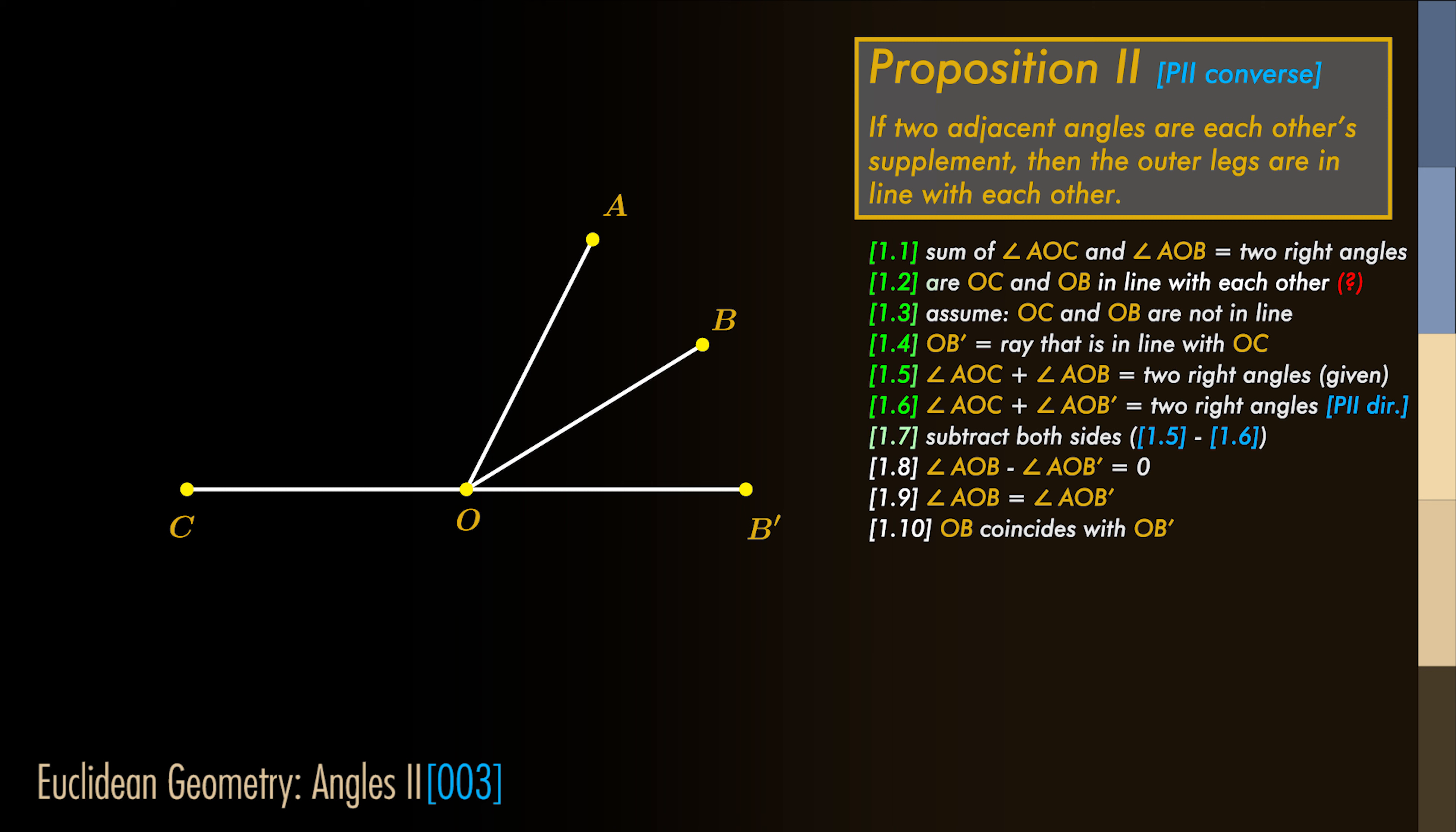Let's now subtract the two sides of the equation. By subtracting we can conclude that angle AOB must be equal to angle AOB'.